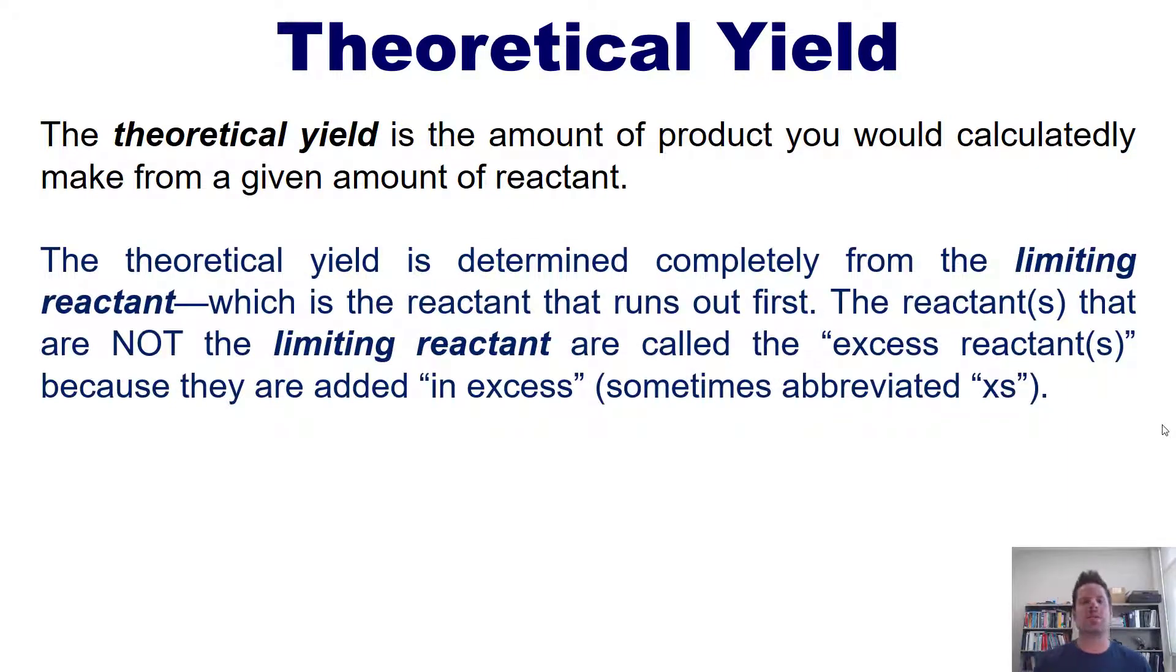So the theoretical yield is determined completely from the limiting reactant, which is the reactant that runs out first. The reactants that are not the limiting reactant are called the excess reactant because they're added in excess. We sometimes abbreviate excess with the letters XS because it's shorthand.